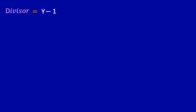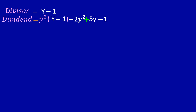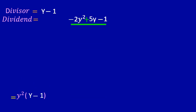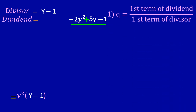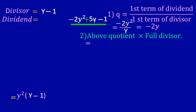Now we repeat the process with the new dividend minus 2y² plus 5y minus 1. Rule one: minus 2y² divided by y gives minus 2y. Rule two: multiply minus 2y by the full divisor y minus 1. Opening the bracket, minus 2 multiplies both terms: minus 2y² for the first term, and plus 2y for the second term, since minus times minus is plus.